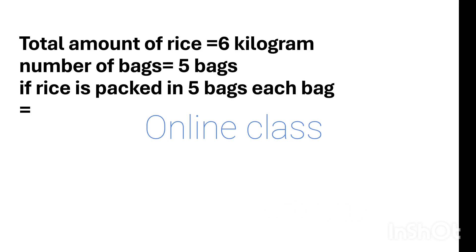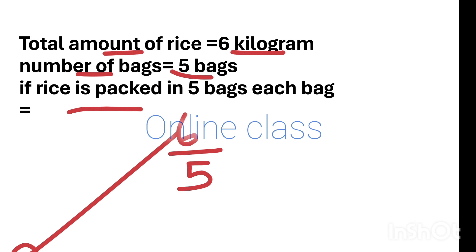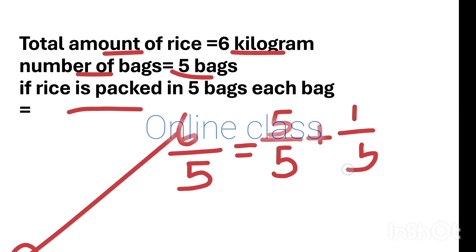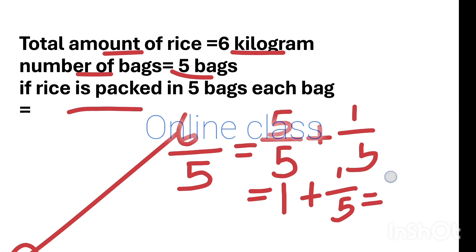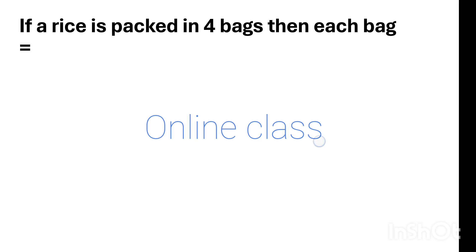The total amount of rice is 6 kg. Number of bags is 5. So we do 6 divided by 5. 6 divided by 5 gives us 1 kg with a remainder, which we write as 1 and 1 by 5.